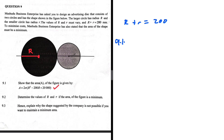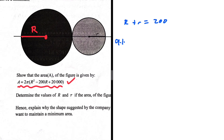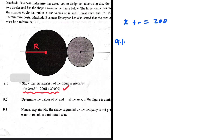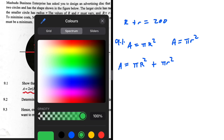For 9.1, we're supposed to show that the area of the figure is given by that equation. We have the bigger circle and the smaller circle. The area of the bigger circle will be πR². The area of the smaller circle will be πr². So the area of the entire figure is going to be πR² plus πr².